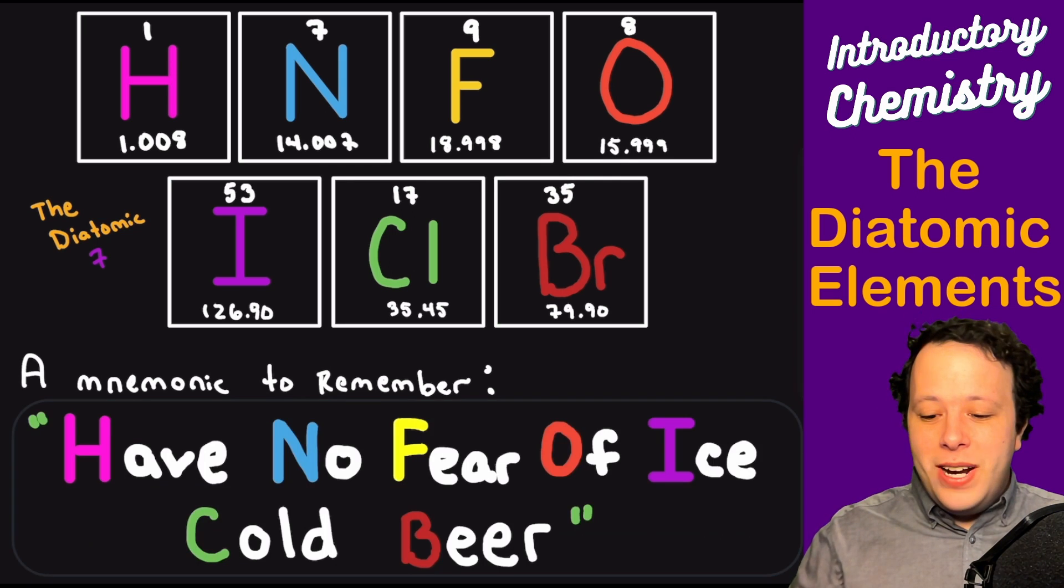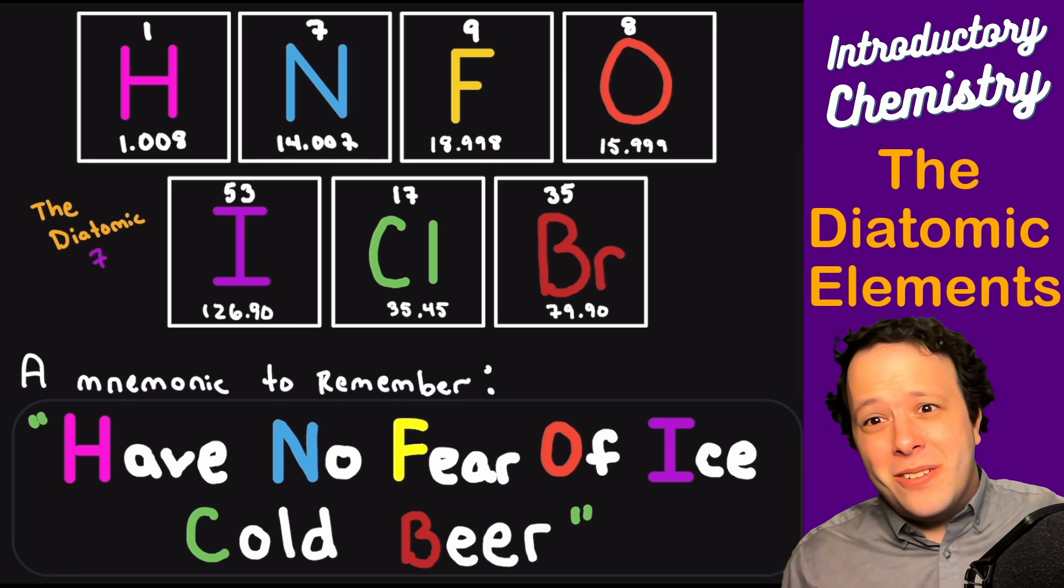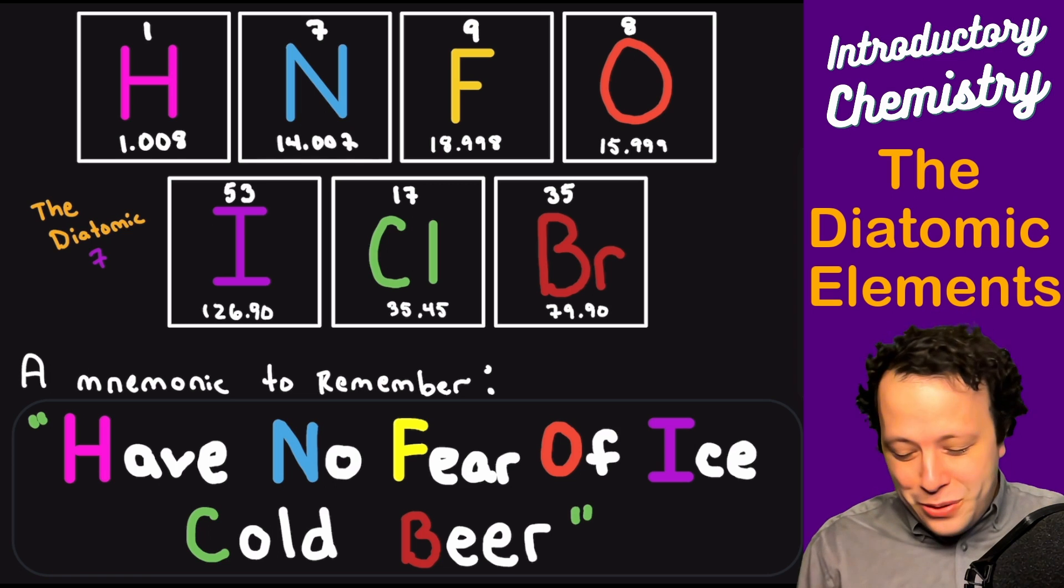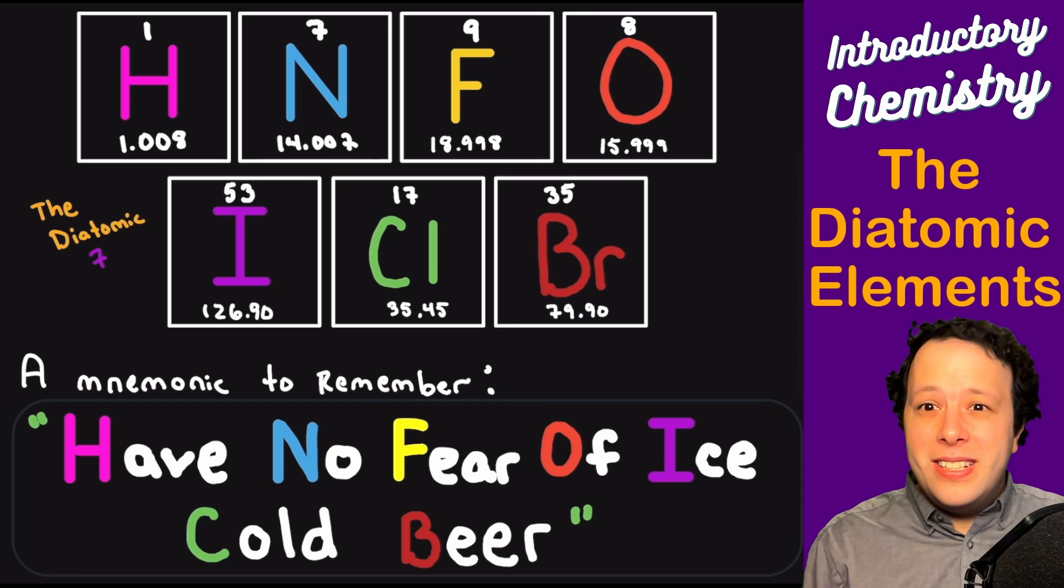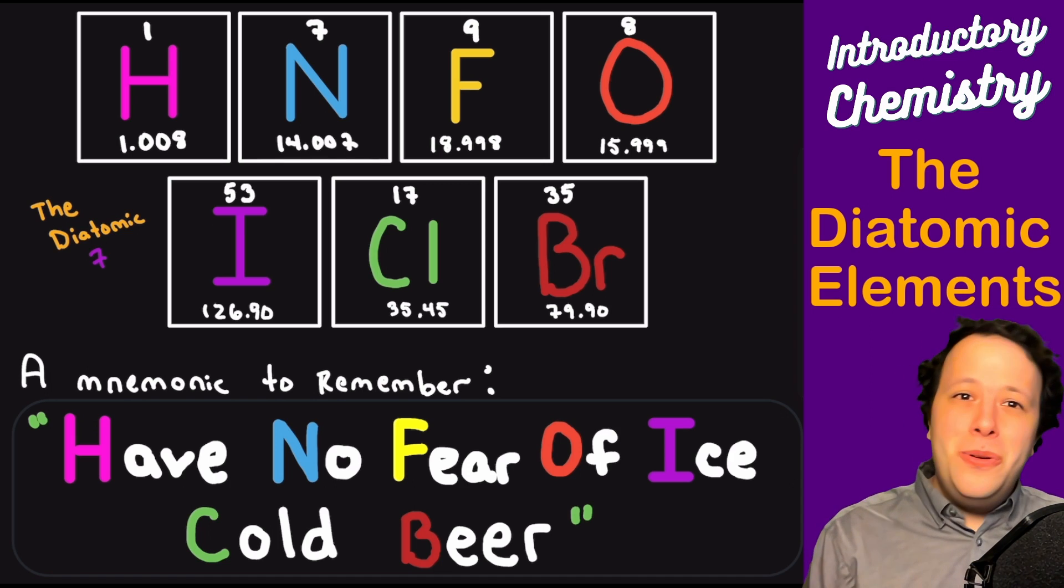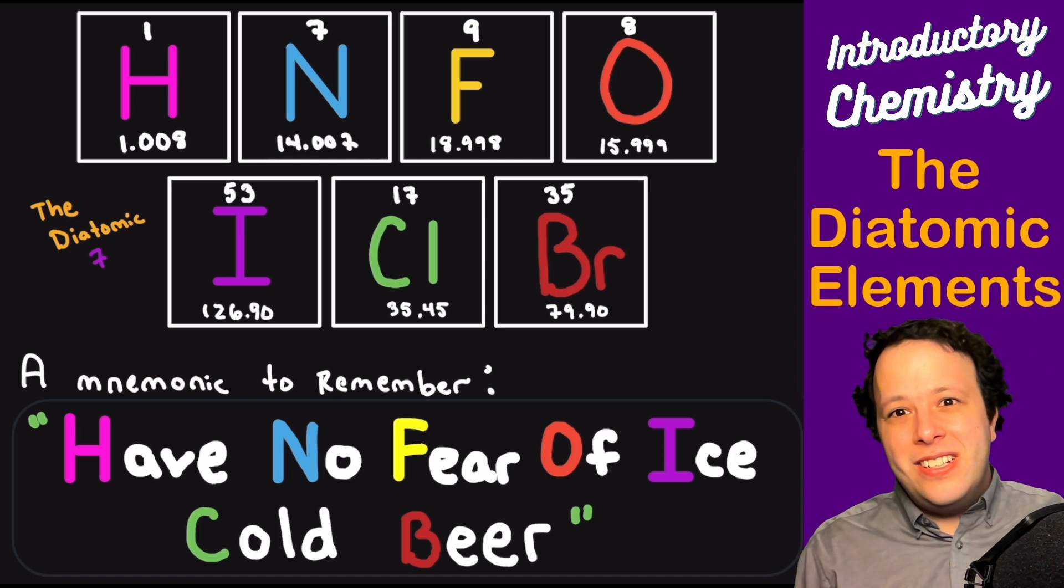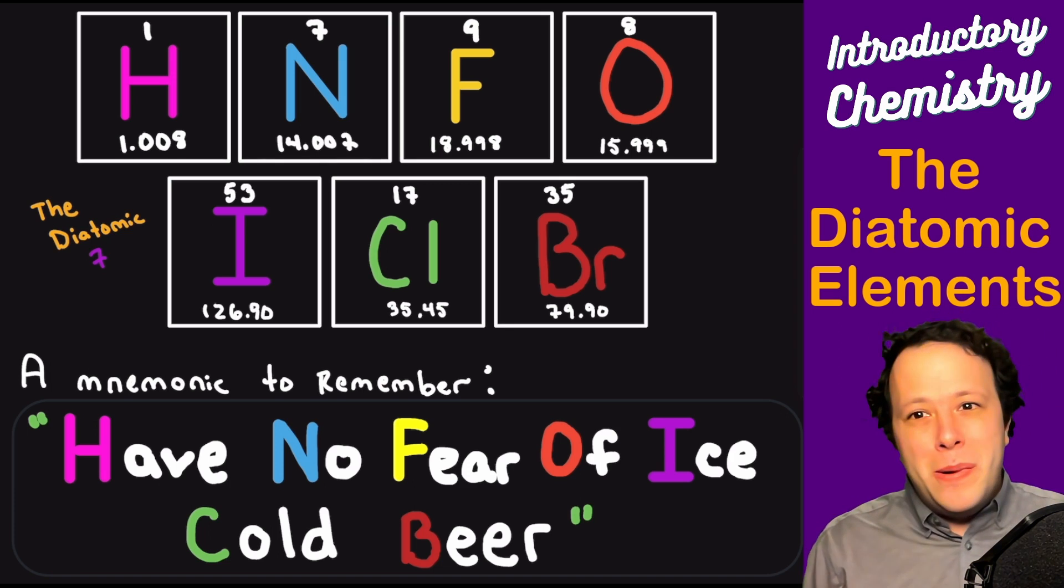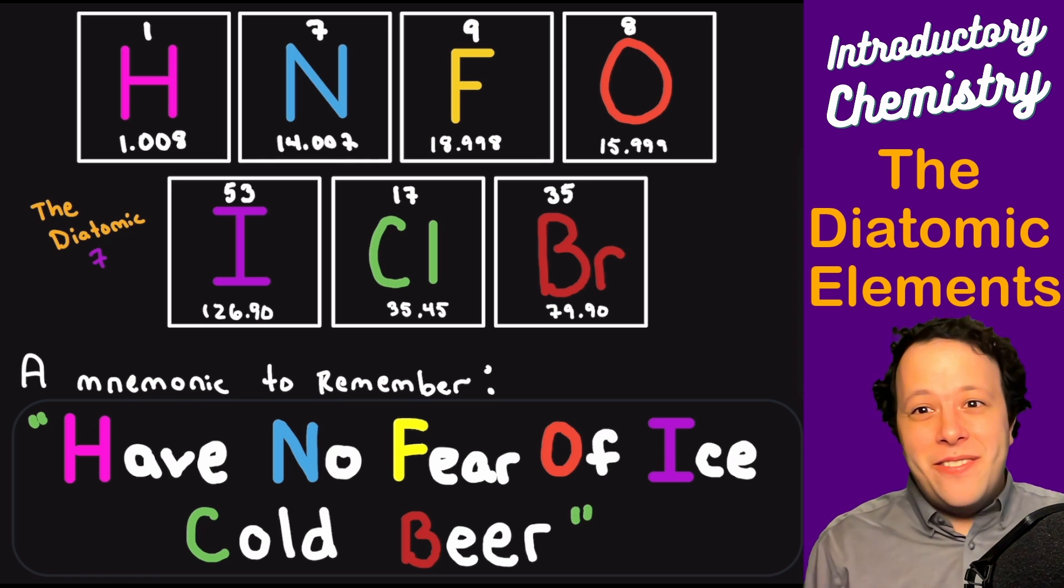For this, the phrase you have to remember is 'Have No Fear Of Ice Cold Beer,' which is always true. Every first letter here is one of your diatomics: H is hydrogen, N is nitrogen, F for fluorine from fear, O is oxygen, I is iodine, C is chlorine, and B is bromine. If you remember 'Have No Fear Of Ice Cold Beer,' you will never forget your seven diatomics.